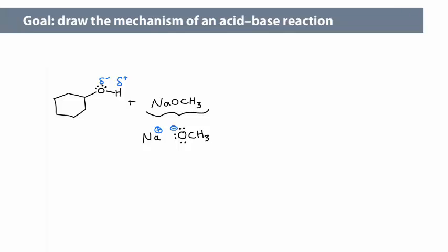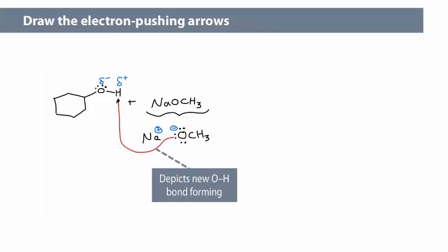Negative and positive charges attract. Use that principle to draw the mechanism. Where should the first arrow start? Electron-pushing arrows always start at electrons and point to an atom or bond. A reliable starting point is a negative charge, an area of high electron density. The first arrow starts from the negatively charged oxygen and points to the delta-positive hydrogen.